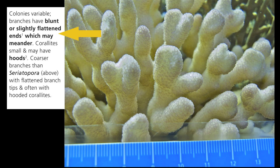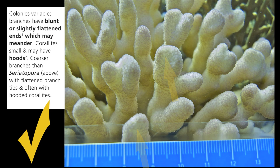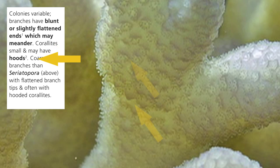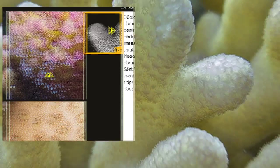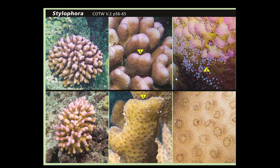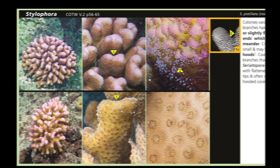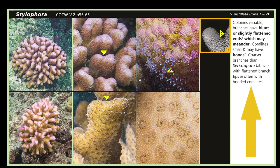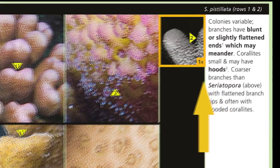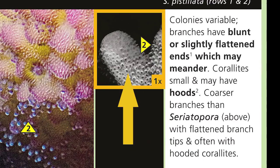Note the bold text: 'Branches have blunt, slightly flattened ends' — check. 'Coralites small and may have hoods' — check. The identification of the coral you seek to name has three steps: one, close comparison with the images in the Coral Finder; two, cross-checking of the key features; and three, confirmation of true scale.